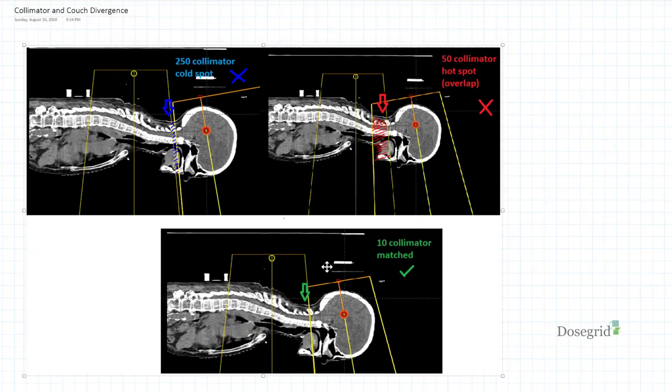Using a properly matched collimator angle ensures a homogenous, or even, dose distribution throughout the spine.